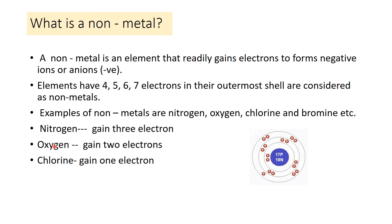Similarly, oxygen has six electrons in its outermost orbit, so to complete its octet it gains two electrons, resulting in two negative charge (O²⁻). Nitrogen has five electrons in its outermost shell, so it gains three electrons to make its octet complete, and then gets three negative charge (N³⁻).